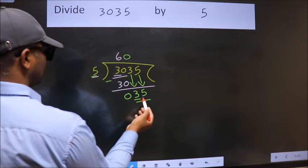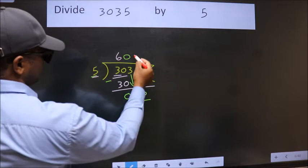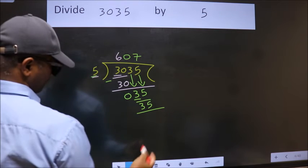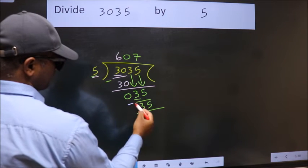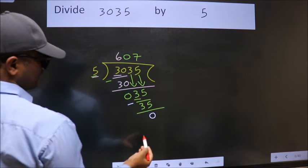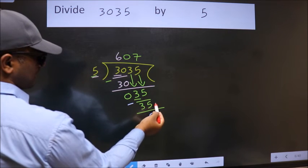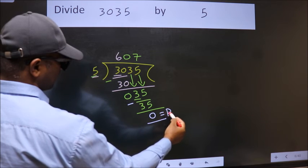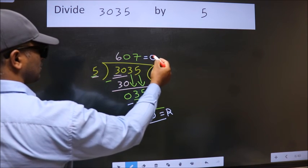When do we get 35 in 5 table? 5 7s, 35. Now we subtract. We get 0. No more numbers to bring it down. So we stop here. This is our remainder. This is our quotient.